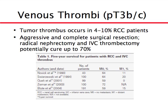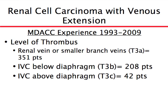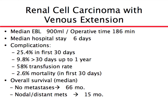Aggressive and complete resection are very important and can provide cure in up to 70% of patients, especially if there are no signs of metastasis outside the abdominal area. Our experience here over about 16 years includes about 600 patients with venous invasion. The median age is about 60 years, follow-up about two years, and tumors tend to be large — about 10 centimeters on average. Most are clear cell tumors. Most tumor thrombus is limited to the renal vein, with the minority extending into the heart.